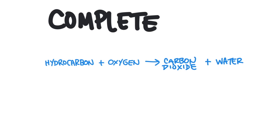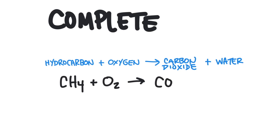An example of this would be methane, CH4, reacting with oxygen gas, which is always O2, and we end up with CO2 and H2O. We always have to go back and balance these — that's the trick. In this case, we put a 2 in front of the water and a 2 in front of the O2 to get everything to balance out.